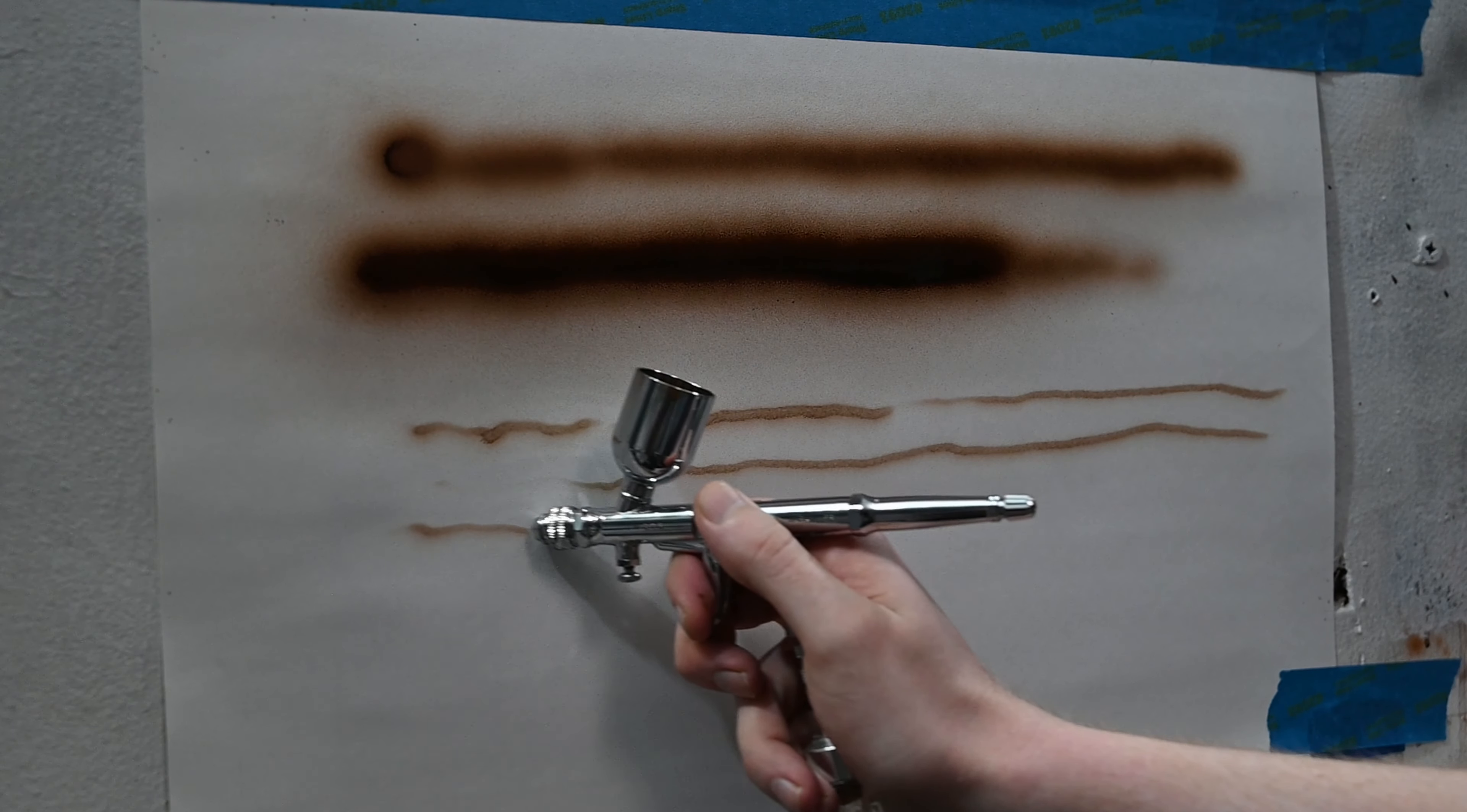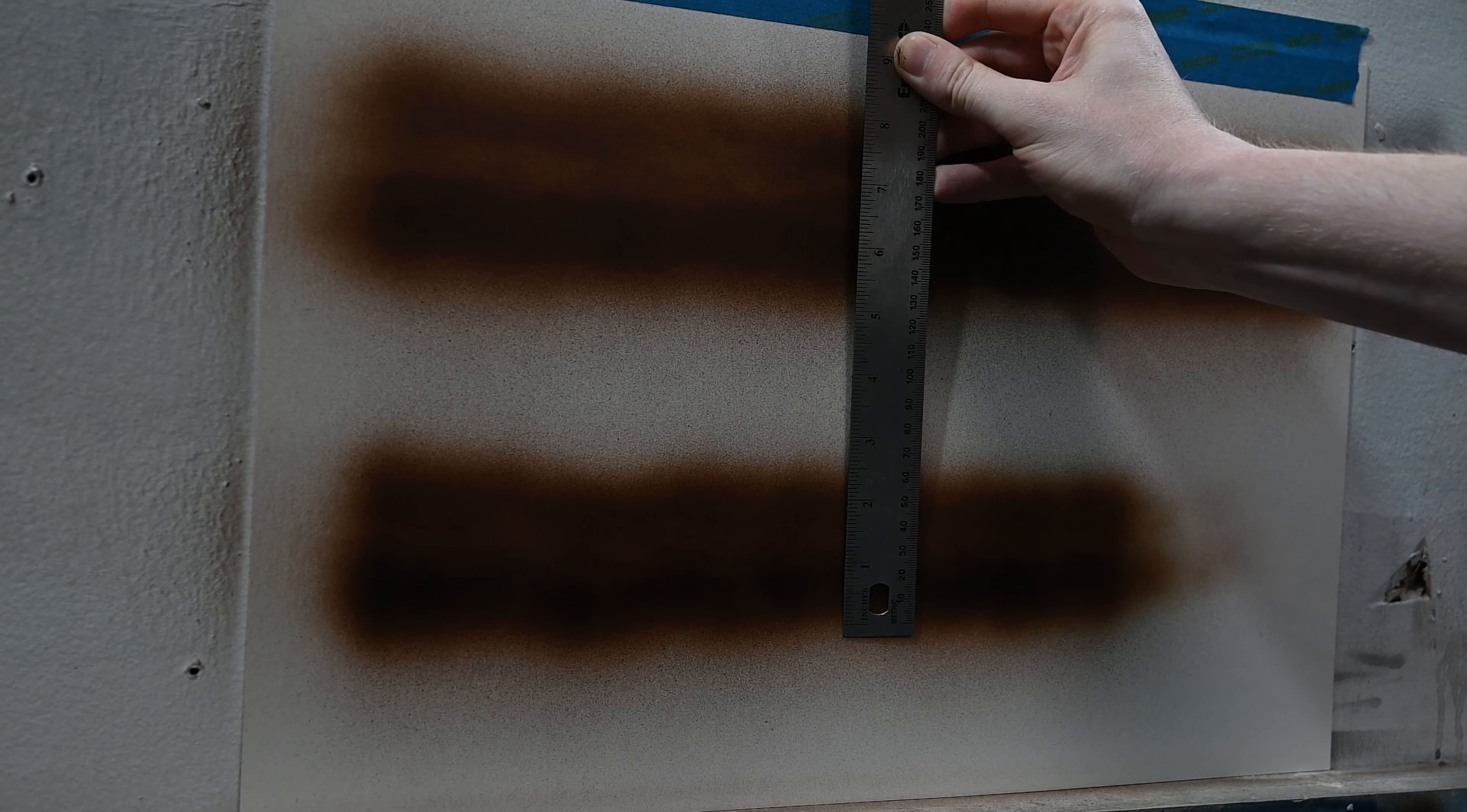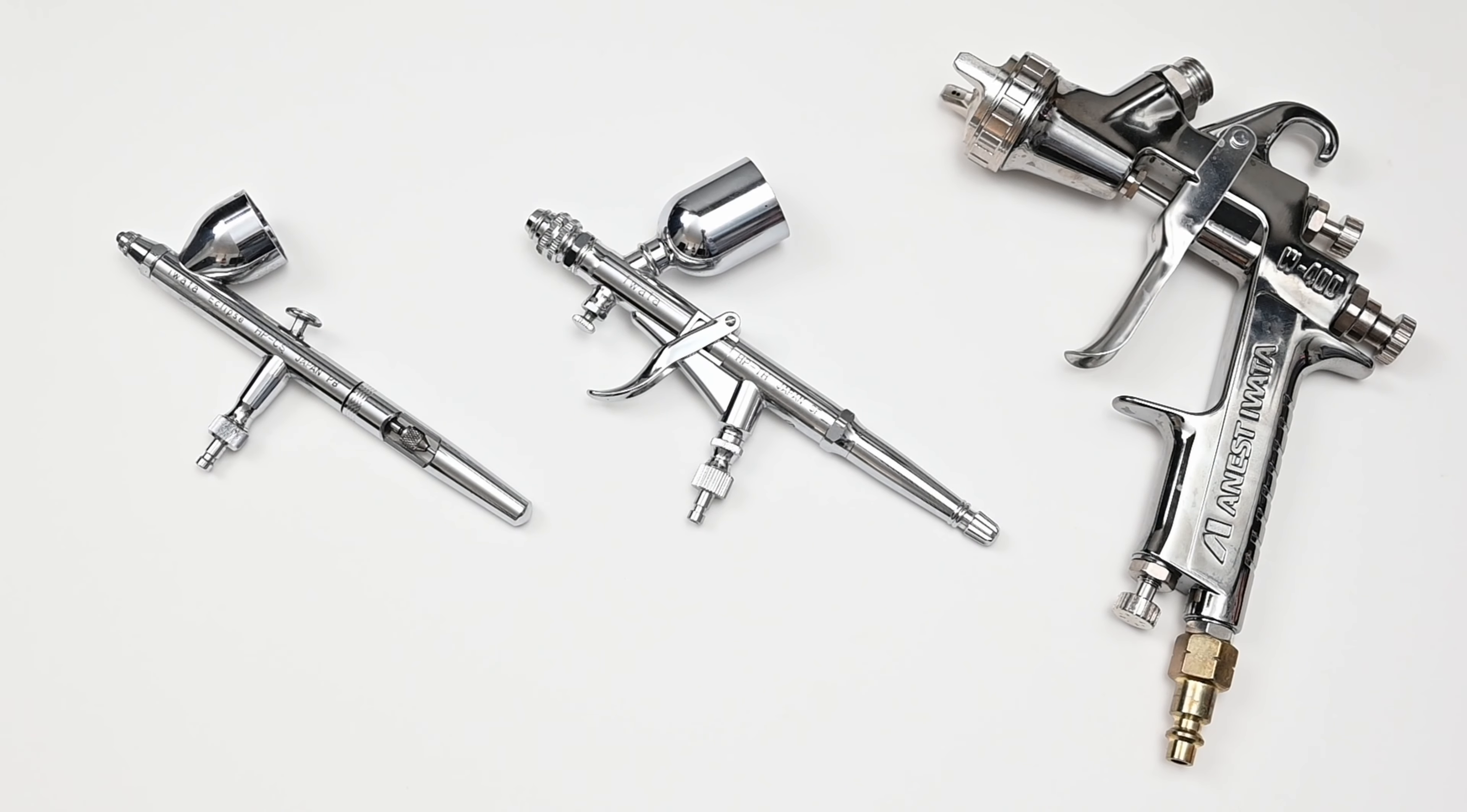If you're looking for fine lines or details this is not the airbrush. As you can see here this is the thinnest line I'm able to paint. Checking with a ruler the thinnest line I'm able to paint is roughly around a quarter of an inch. And with the fan cap I can get a much larger spray pattern of around two and a half to three inches.